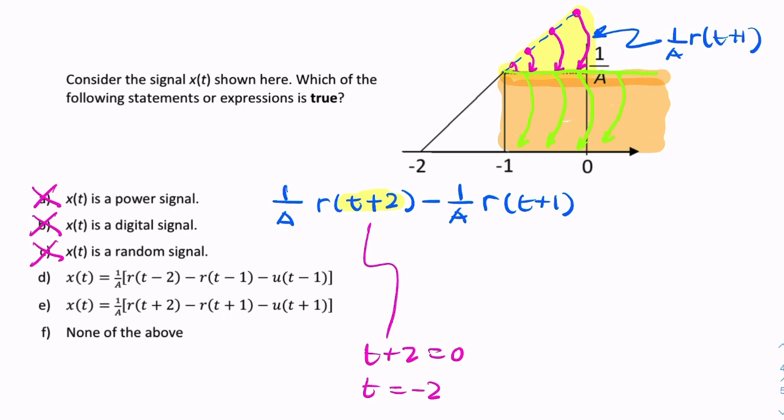I've just drawn something that is zero for a long period of time and then suddenly is non-zero. It's suddenly one over a. So, it's as if I'm now subtracting a step, not a unit step, but a scaled unit step. So, it's a step with amplitude one over a. And it starts at t equals minus one. So, t plus one.